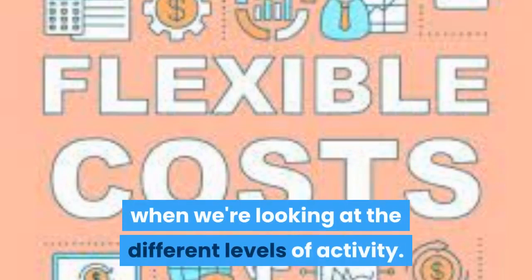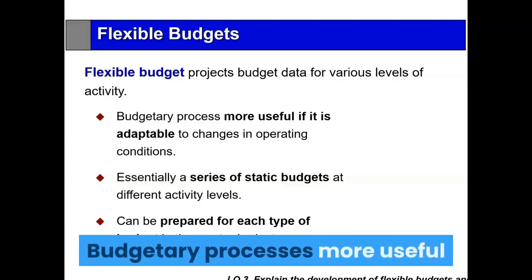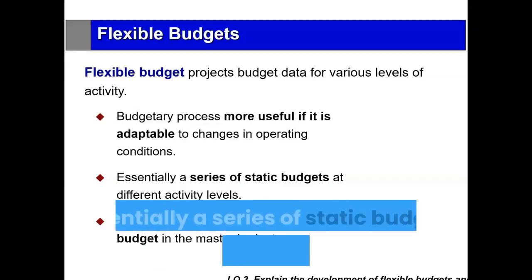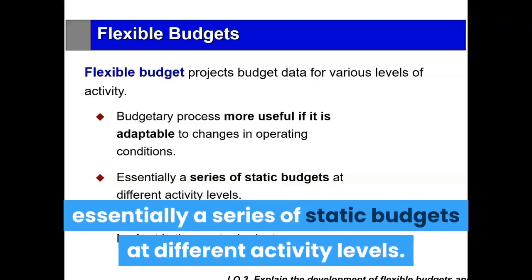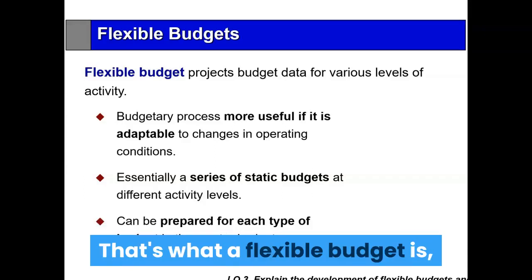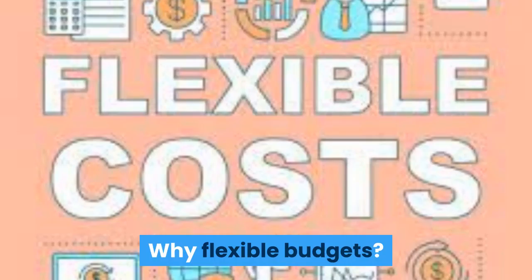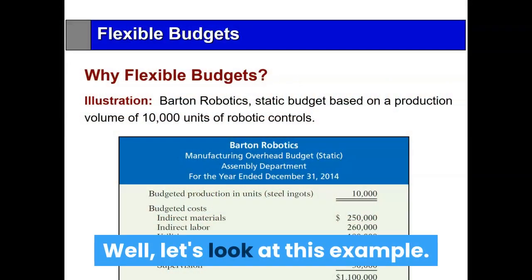When looking at different levels of activity, the budgetary process is more useful if it's adaptable to changes in operating conditions. A flexible budget is essentially a series of static budgets at different activity levels, and it can be prepared for each type of budget in the master budget.